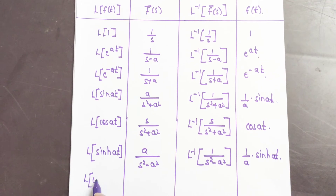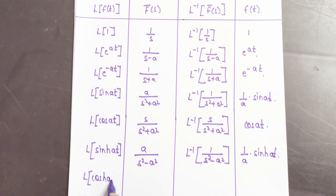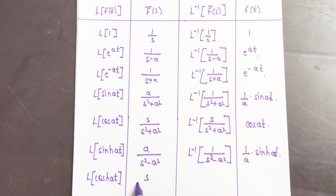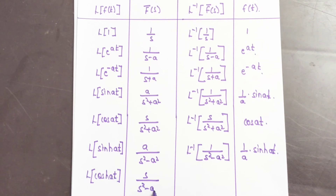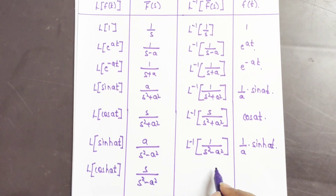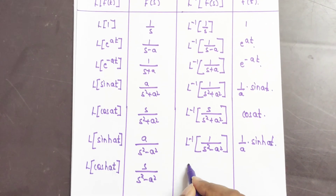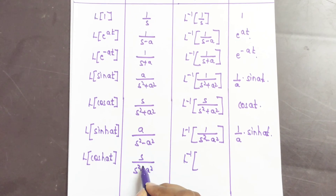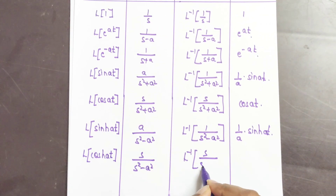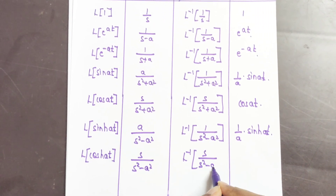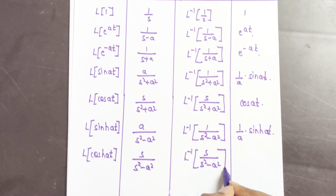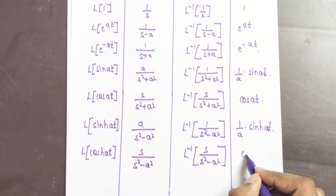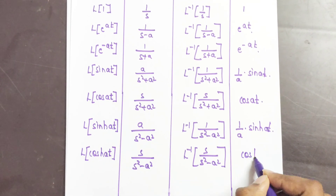For Laplace of cosh(at), the formula is s/(s² − a²). Applying the inverse Laplace transform to s/(s² − a²), the answer is f(t) = cosh(at).